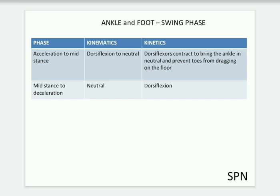For ankle and foot in swing phase: acceleration to mid swing — movement is dorsiflexion to neutral; dorsiflexors contract to bring the ankle to neutral and prevent toes from dragging on the floor. Mid swing to deceleration: kinematics is neutral; kinetics involves dorsiflexion. These are the phases of the gait cycle in stance and swing phase — biomechanics, kinematics, and kinetics. You can write this in tabular form; it is quite easy in detail. Thanks for watching.